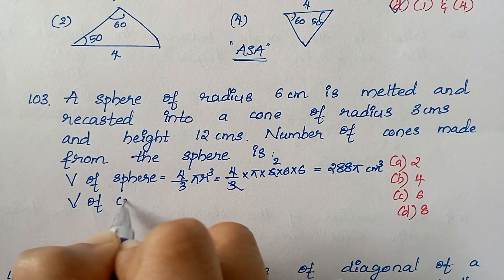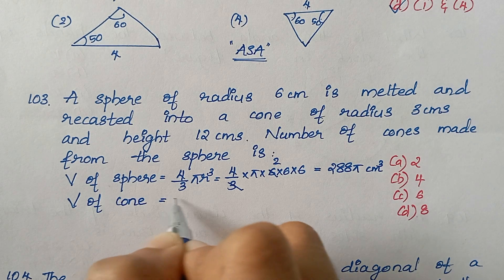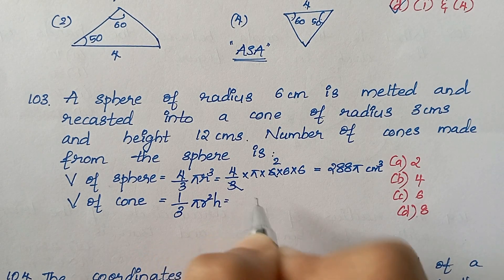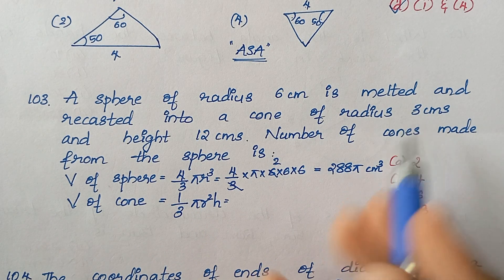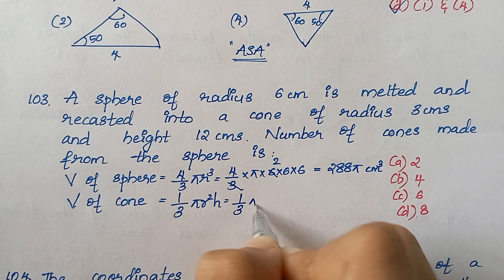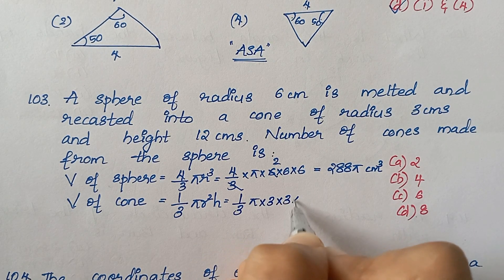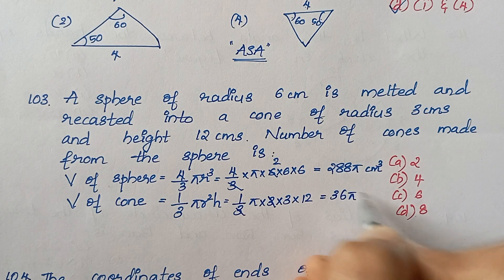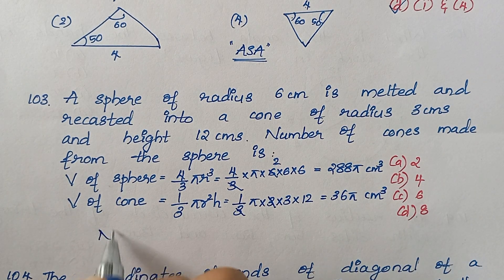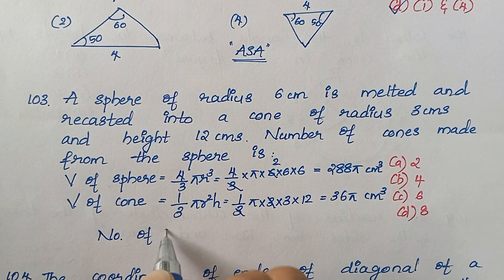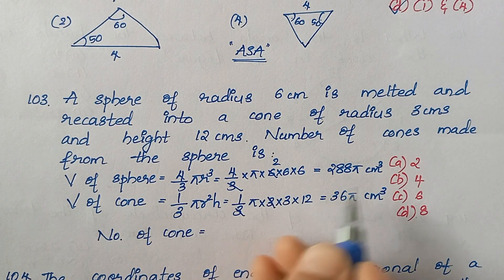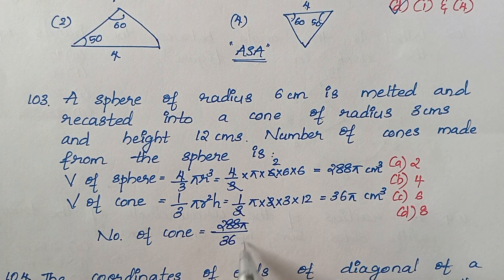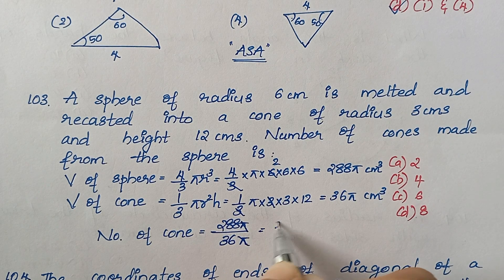The volume of a cone is (1/3)πr²h. With radius 3 and height 12: (1/3) × π × 3² × 12 = 36π. The number of cones = 288π ÷ 36π = 8.